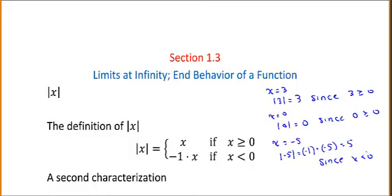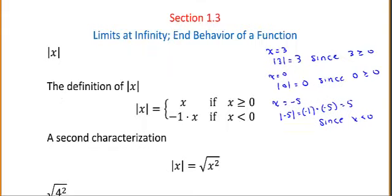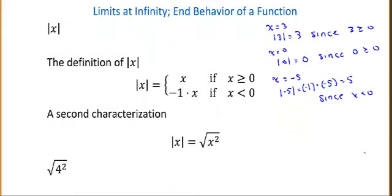This works out to the ideas you had of the absolute value of x from algebra class — in some sense you could sort of ignore the sign. We have to be a little more careful when dealing with variables, though. A second characterization is that the absolute value of x is the square root of x squared.